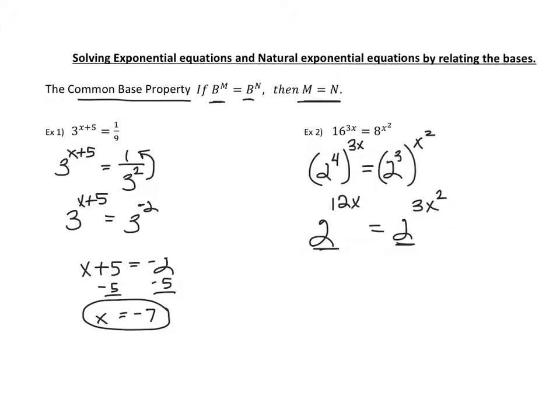Now we have it in good shape. We have 2 and 2, which are the bases that we need. Therefore, using our common base property, we can set 12x equal to 3x squared. Since we have an x squared, it is a quadratic. We bring everything to one side by subtracting the 12x, setting it equal to 0.